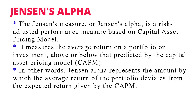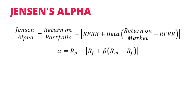The next measure is Jensen's Alpha. Jensen's Alpha is a risk-adjusted performance measure based on the Capital Asset Pricing Model (CAPM). It measures the average return on a portfolio above or below that predicted by the CAPM. Jensen's Alpha represents the amount by which the average return on the portfolio deviates from the expected return given by the CAPM. Assuming the CAPM is correct, Jensen's Alpha is calculated as: return on the portfolio minus the required rate of return computed by CAPM, which is the risk-free rate of return plus beta times (RM minus RF).